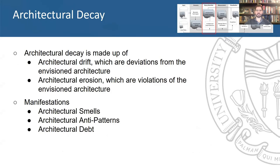The second task performed by Arcade is architectural decay detection. Architectural decay is made up of two different phenomena, drift and erosion, which are deviations and violations from the envisioned or prescriptive architecture. This decay can manifest in various different ways, but the main ones are architectural smells, anti-patterns, and debt.